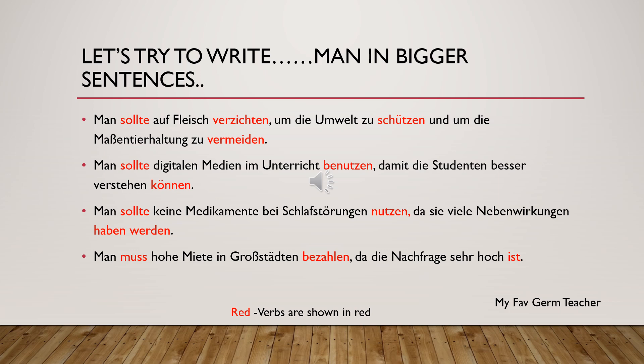'Man sollte keine Medikamente bei Schlafstörungen nutzen, da sie viele Nebenwirkungen haben werden.' This is a sentence with 'da', which means 'because'. When 'da' comes, the verb goes to the end. A person should not use medicines for sleeping problems because they can have lots of side effects. Next: 'Man muss hohe Miete in Großstädten bezahlen, da die Nachfrage sehr hoch ist.' A person should pay a large amount of rent in big cities because there is a high demand — 'Nachfrage' means demand.